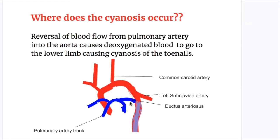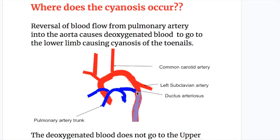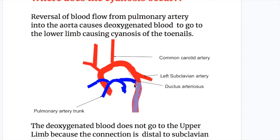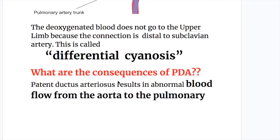Reversal of blood flow from the pulmonary artery into the aorta causes deoxygenated blood to go to the lower limb, causing cyanosis of the toenails. The deoxygenated blood goes to the lower limb but not to the upper limb, because the connection is distal to the subclavian artery — the subclavian artery is before the connection. So the blood from the pulmonary artery goes to the descending aorta and to the lower limb, which is known as differential cyanosis.